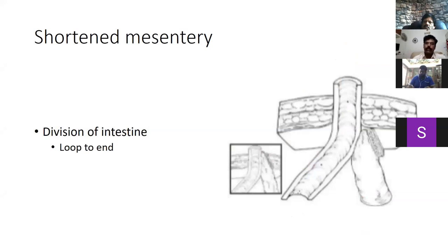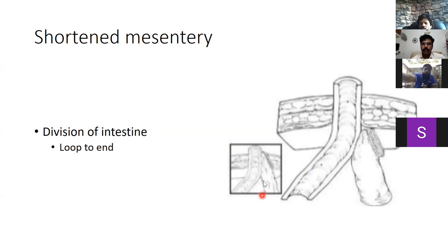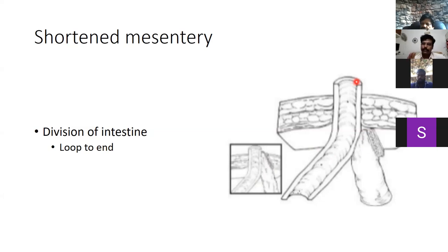Suppose despite the scoring we are still not able to bring it out — that means the inflammatory process is quite significant. In those cases, instead of bringing out a loop stoma, it is sometimes easier to make a stoma after division of the intestine. For example, dividing the intestine and letting go the distal limb into the intraperitoneal component — just fashioning an end ileostomy can help us to mature a good stoma, avoiding further issues in stoma maturing that can occur with an inflamed loop.